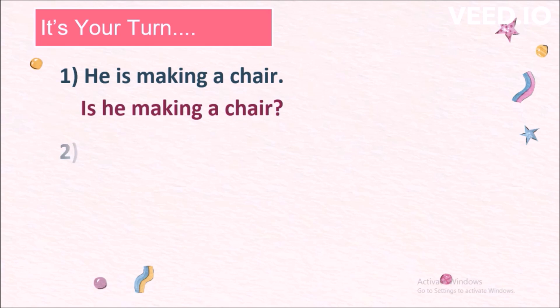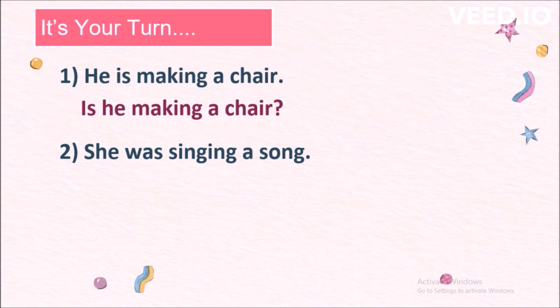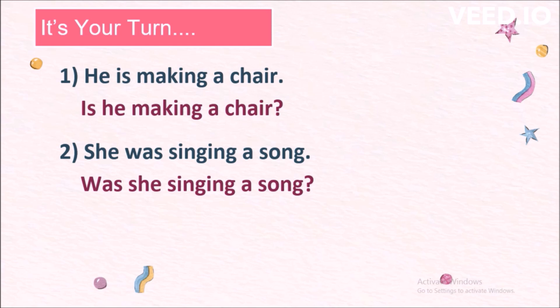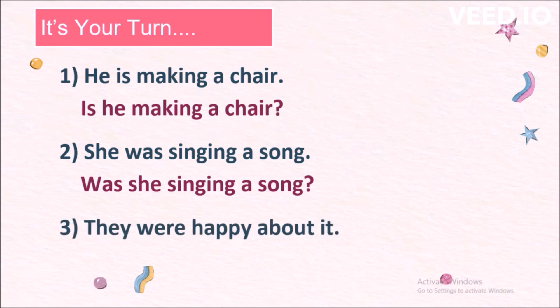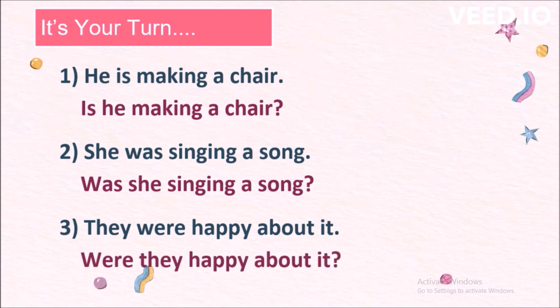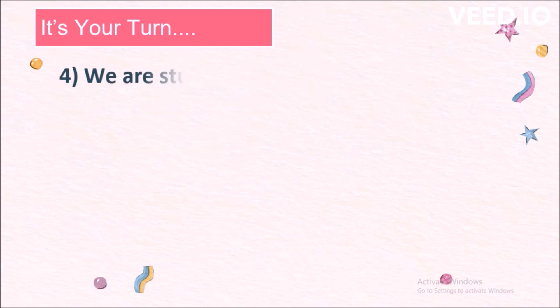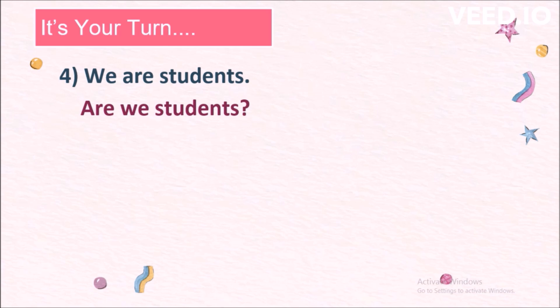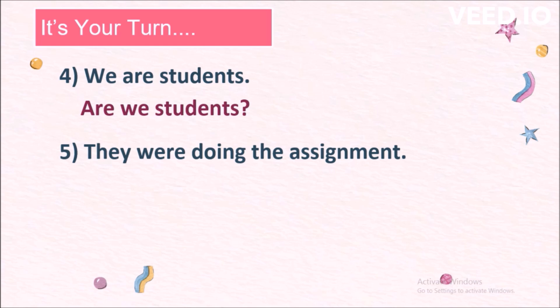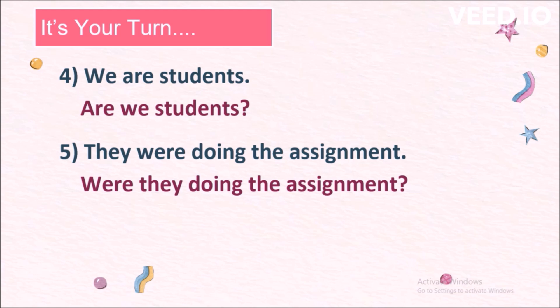Practice questions: Is he making a chair? She was singing a song — Was she singing a song? They were happy about it — Were they happy about it? We are students — Are we students? They were doing the assignment — Were they doing the assignment?